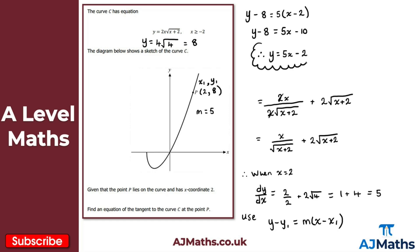So y equals 5x minus 2 is the equation of the tangent to curve C at point P. You could express this in a few different ways, but that's our solution. That brings us to the end of this video on the product rule — in the next video we're going to take a look at the quotient rule.